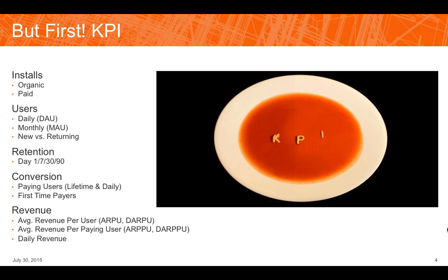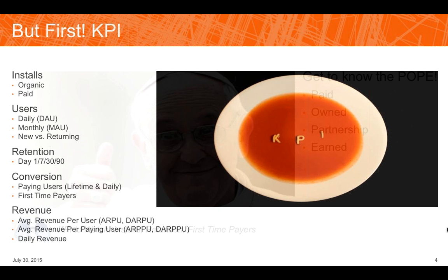These are the baseline bare-minimum KPIs any game has to know to understand how it's functioning and be able to make changes that impact your success. First, look at installs — both organic and paid — so you know where your users are coming from and whether your acquisition spend is effective. You also need to look at user numbers: daily active users, monthly active users, and new versus returning users. That's a good indicator of how many people you're bringing in, how viral the game is becoming, and if you're able to retain users.